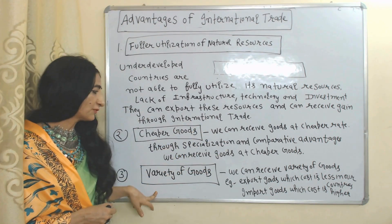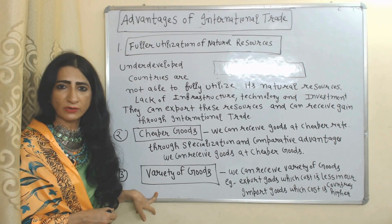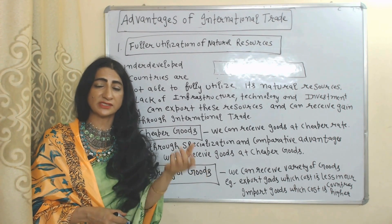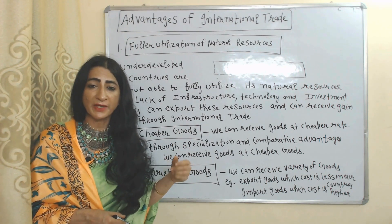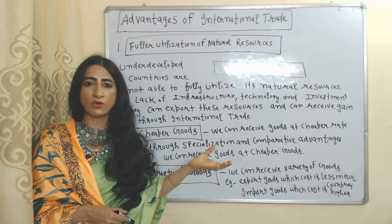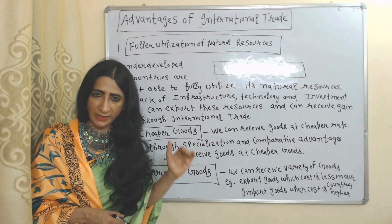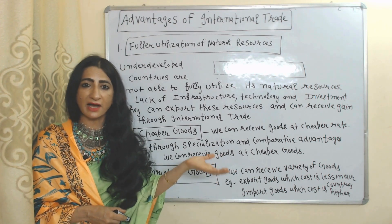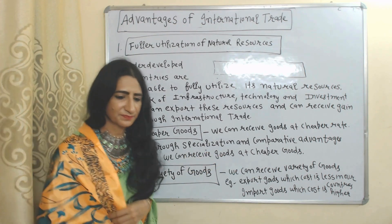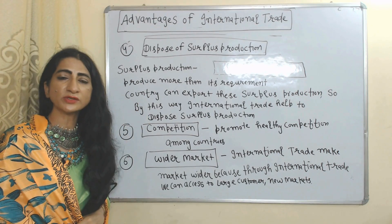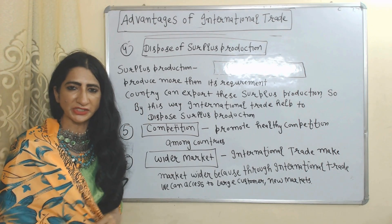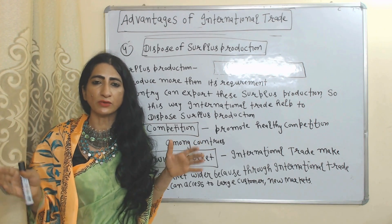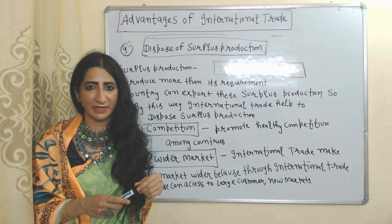Cheaper goods: through specialization and comparative advantage we can receive goods at a cheaper rate in international trade. Variety of goods: international trade is the main source to receive a variety of goods — for example, export those goods whose cost is lower in our country and import those goods whose cost is higher in our country.